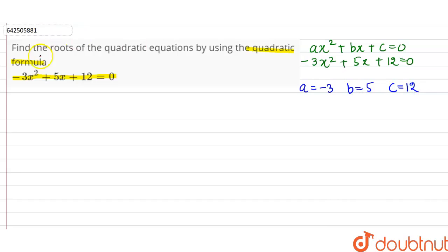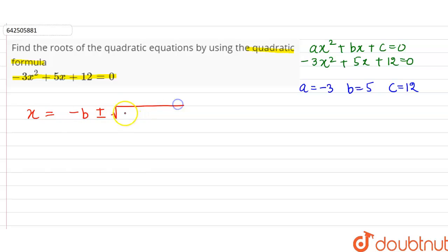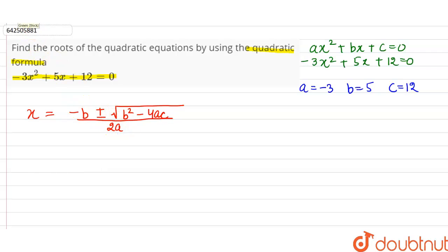Now by the quadratic formula, x is equal to minus b plus minus under root of b square minus 4ac, divided by 2a. This is the quadratic formula for finding the roots of the quadratic equation.